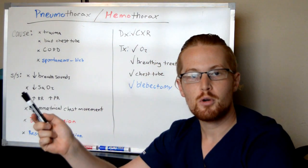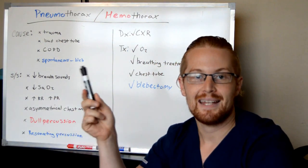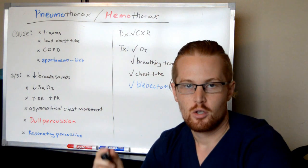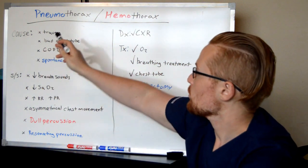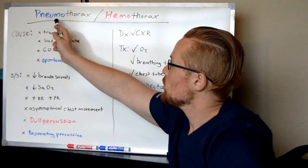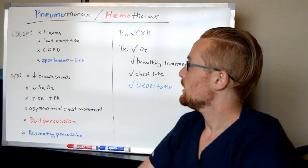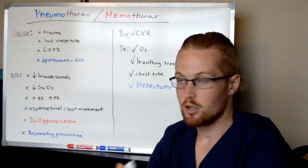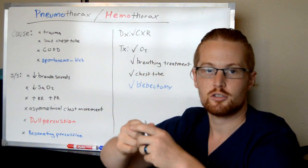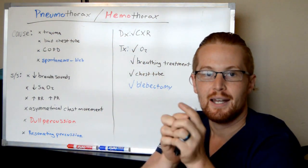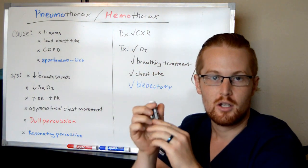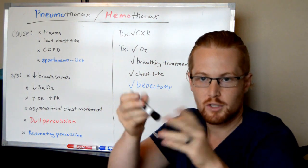Let's talk about pneumothorax and hemothorax. Pneumothorax — 'pneumo' means air in the thorax. So this is going to be air in the pleural cavity around the lung.